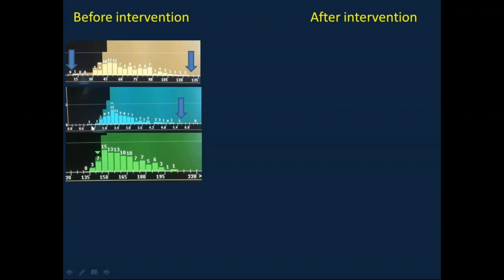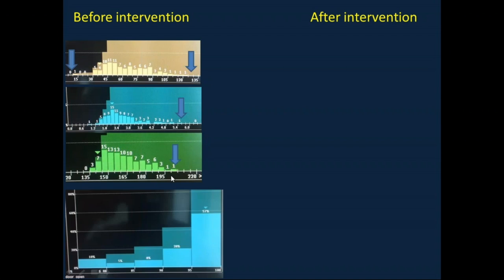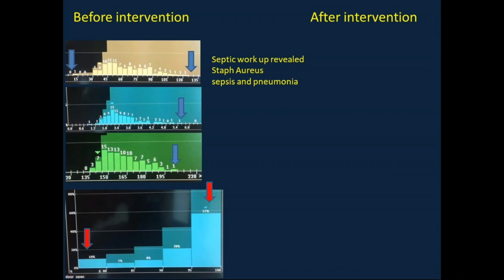Heart rate also showed a very wide base on the histogram. The oxygen histogram was very unstable — with 9% plus 10%, totaling 19% of time with desaturation below 85%. Each 1% represents approximately 15 minutes below 85%. A septic workup was done and showed Staph aureus infection, and the clinical picture was consistent with pneumonia. The infant was started on mechanical ventilation.